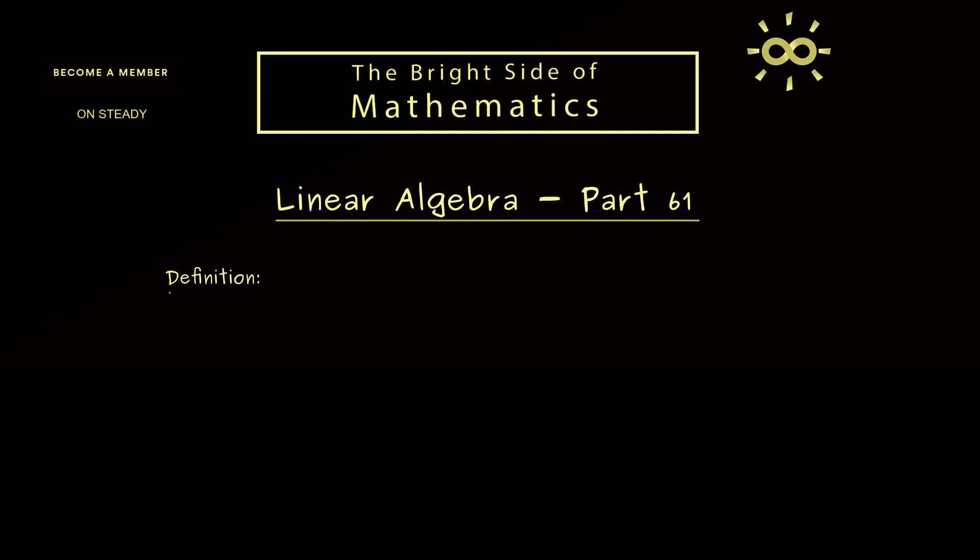Ok, then let's immediately start with the important definition of the day, the definition of similar matrices. And what we need are two square matrices, so let's call them A and B. And moreover, we can consider even the general case, where we have complex numbers as entries.